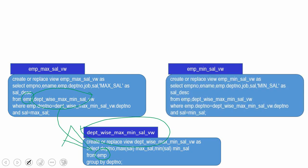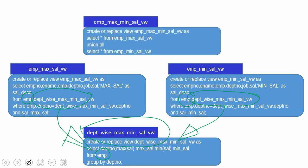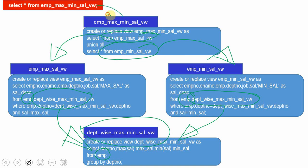The final view combines the max salary view and minimum salary view, each getting information from the underlying base view, which joins the employee table. To replace all these recursively by hand is a tedious process — even in this simple example, and much worse in real-time scenarios. Instead, we can just use the ready-to-use API.